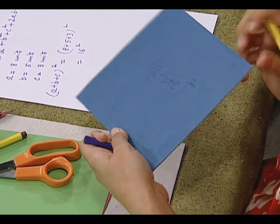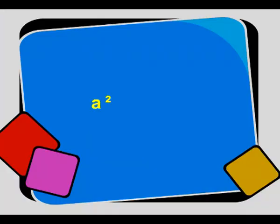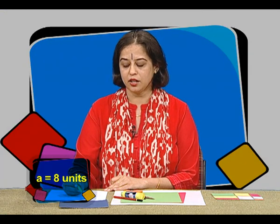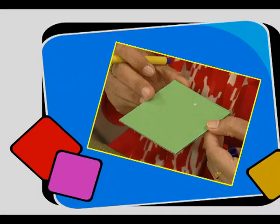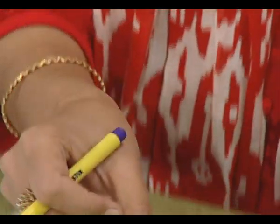Now we will represent the terms on the right hand side of this identity. The first term is a², which equals 8² since we have taken a = 8 units. For representing 8², we will take a square cut out of side 8 units. This square cut out, whose side length is 8 units, is representing a².